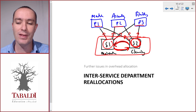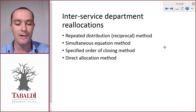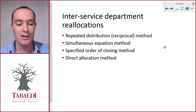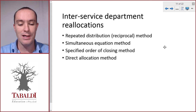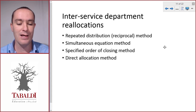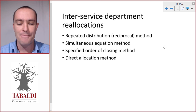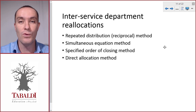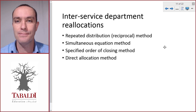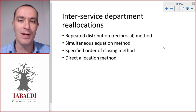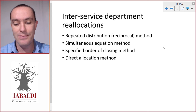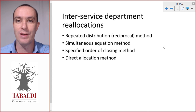There are four different methods we can use to do this: the repeated distribution method, the simultaneous equation method, the specified order of closing method, and the direct allocation method. The best approach is to explain all four methods by way of an example, and that's what we'll do next — looking at an illustrative example with the same information but allocating it in all four different ways.